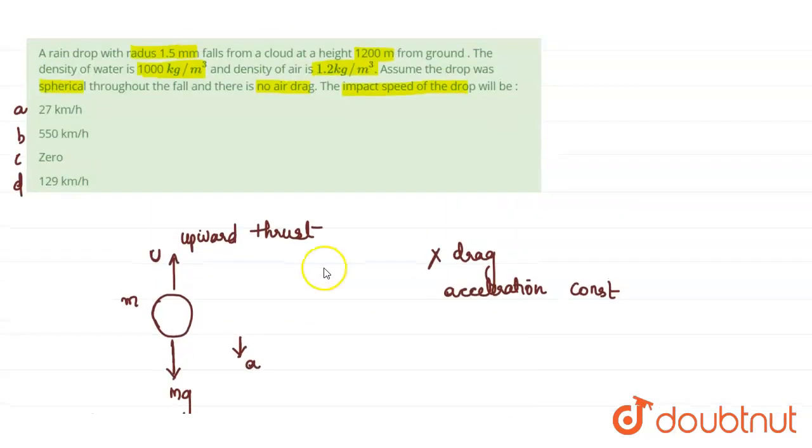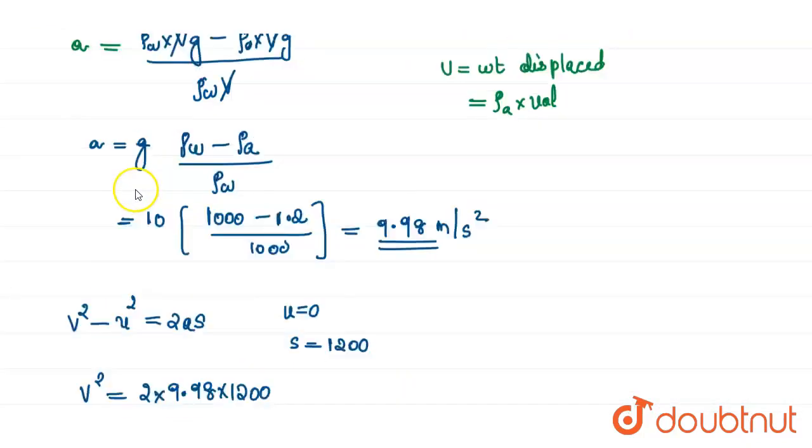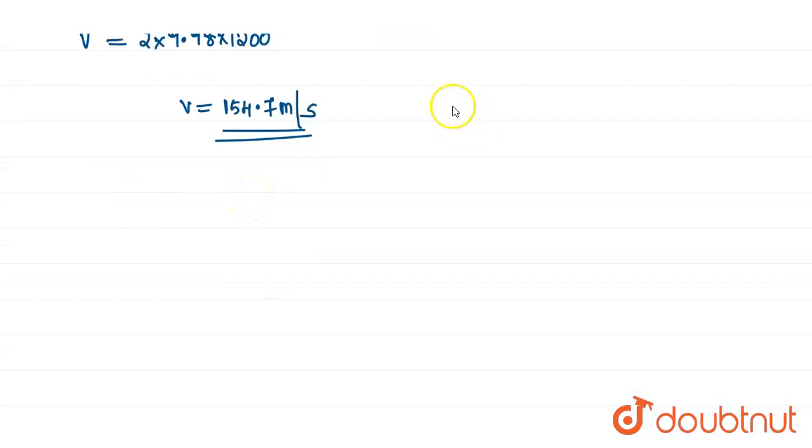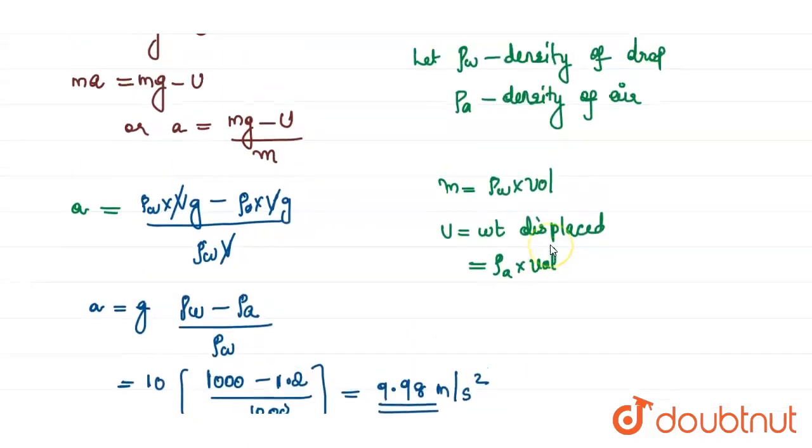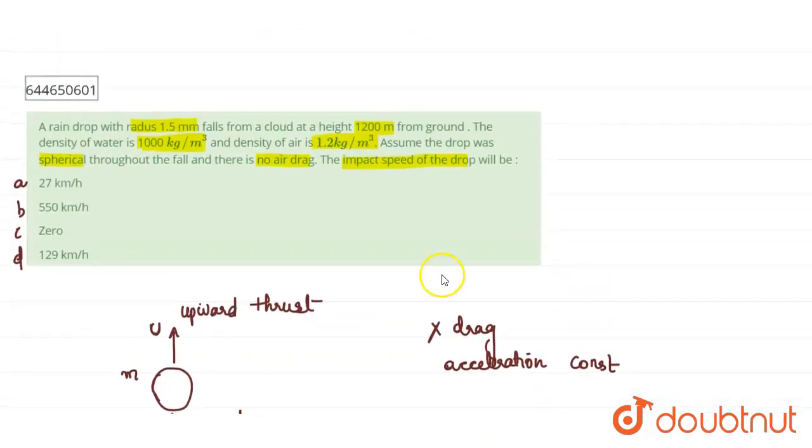On calculating these values, we get velocity equals 157.7 m/s. The answer options are in km/h, so we convert m/s to km/h by multiplying by 18/5, which gives 557 km/h. Checking our answer, 557 km/h is approximately equal to option B, 550 km/h.